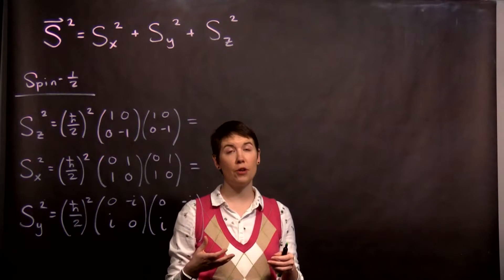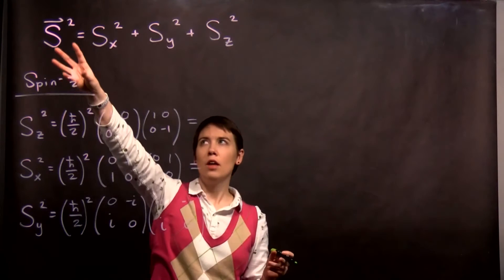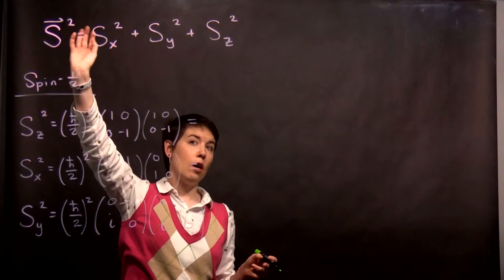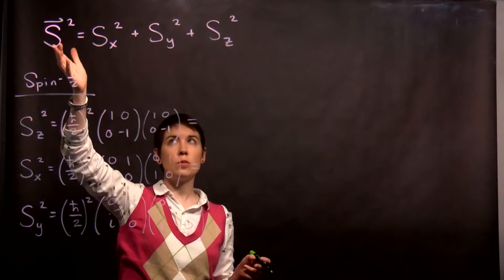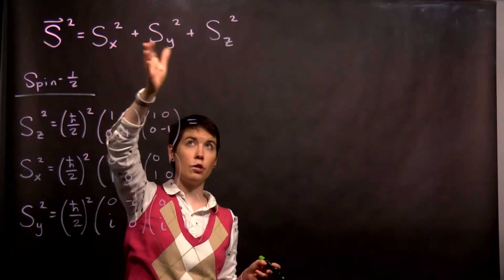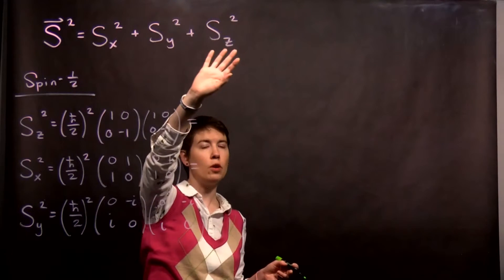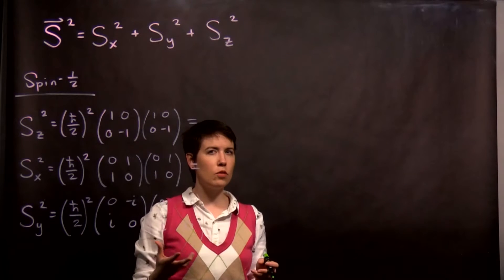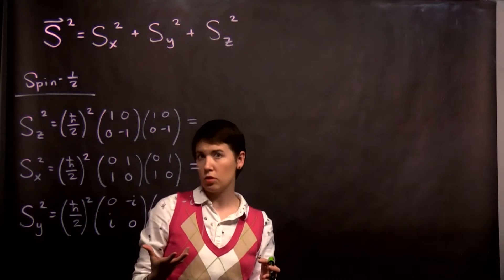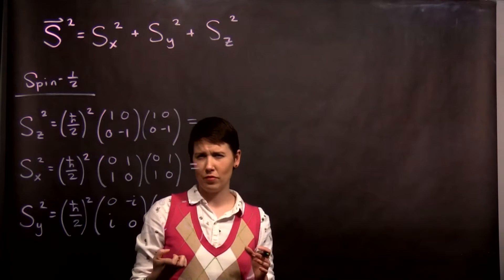We're going to introduce a new operator in this video. This spin operator. And the definition is that it's going to be the sum of the individual spin component squared. So I've written this out. This is a general definition of what this is, and you can think about this as kind of like finding the magnitude of the spin in a way.